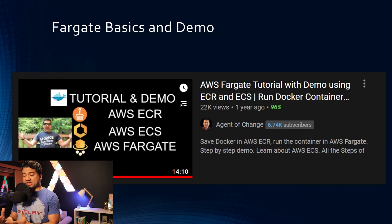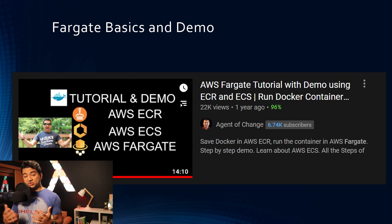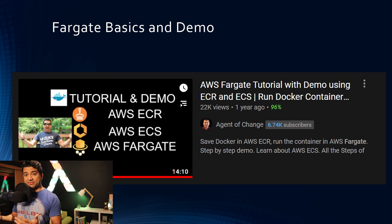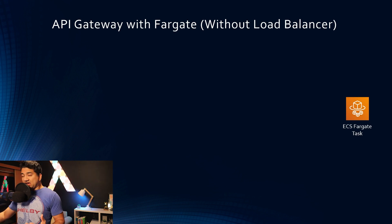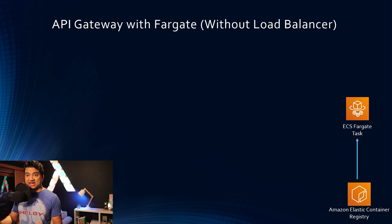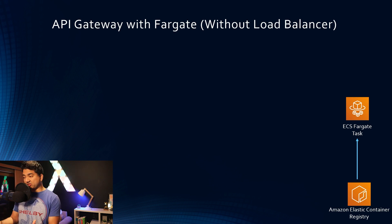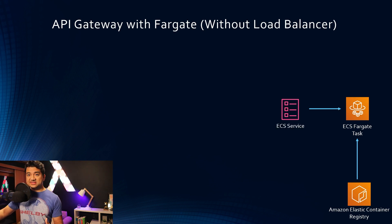Before we dive deep into this design, if you have no idea about what Fargate is and how to use it, I highly recommend watching my Fargate basics video with demo — I'll give a link up top. So first, we have our ECS Fargate task, which is running your application. To have a Fargate task, you have to have your application containerized. You have to store your container in a repository such as Amazon Elastic Container Registry.